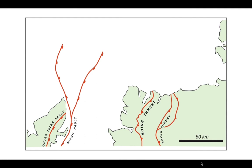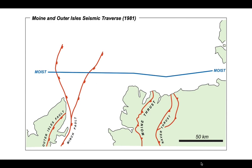Let's turn our attention now to the BIRPS images. The first profile acquired was the Moyne and Outer Isles Seismic Traverse, or MOIST, acquired in 1981, which was an east-west line. As its name suggests, the point of this profile was to try and see the deep structure of the Outer Isles fault on the left, and the Moine Thrust, heading towards the profile from classic outcrops in northern Scotland.